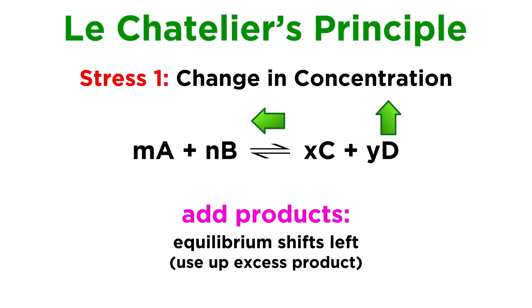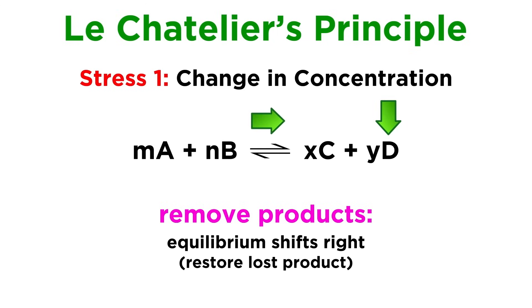Likewise, if we add more product, the system will shift left to get rid of some of it, and if we remove product, the system will shift right to regenerate some of what was lost.